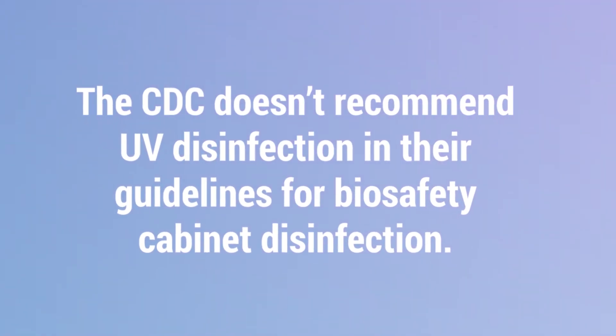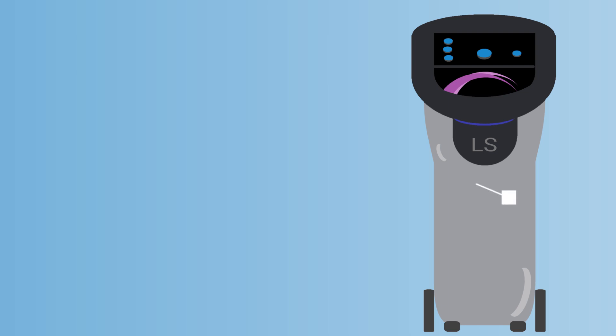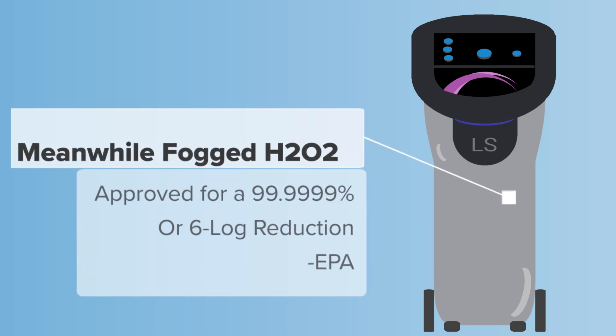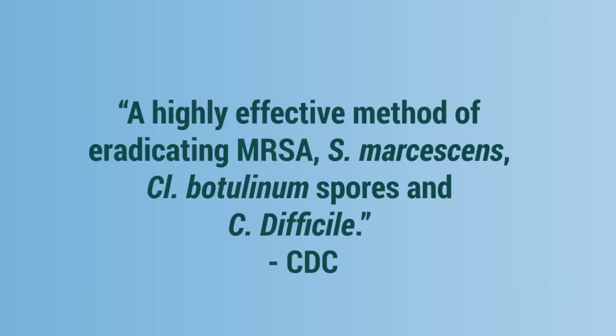Meanwhile, fogged hydrogen peroxide has been approved by the EPA for a 6 log kill, or 99.9999% reduction, and the CDC has said that hydrogen peroxide vapor decontamination has been found to be a highly effective method of eradicating MRSA, Clostridium botulinum, and Clostridium difficile. This point clearly goes to dry fogged hydrogen peroxide.